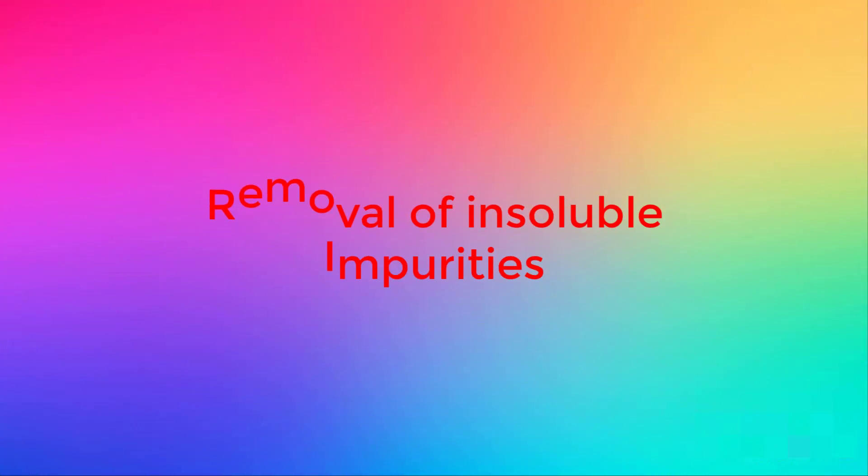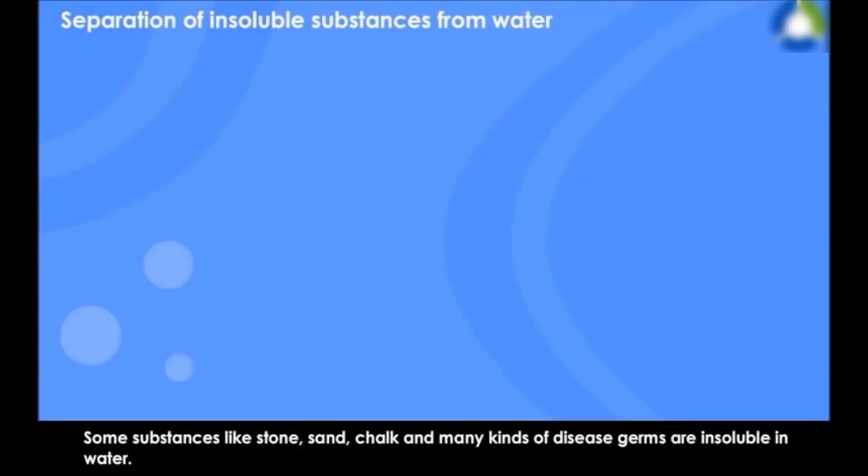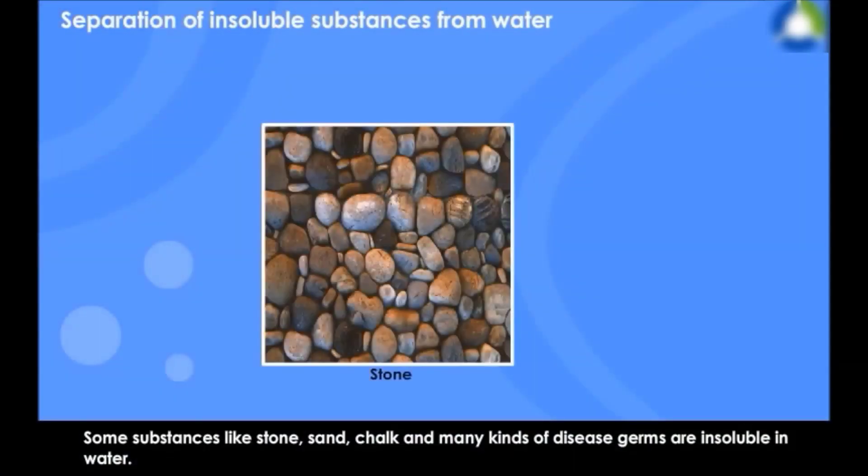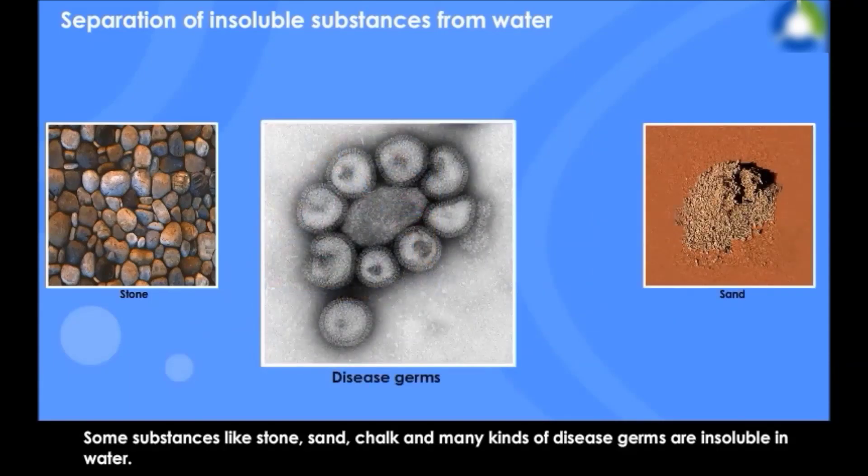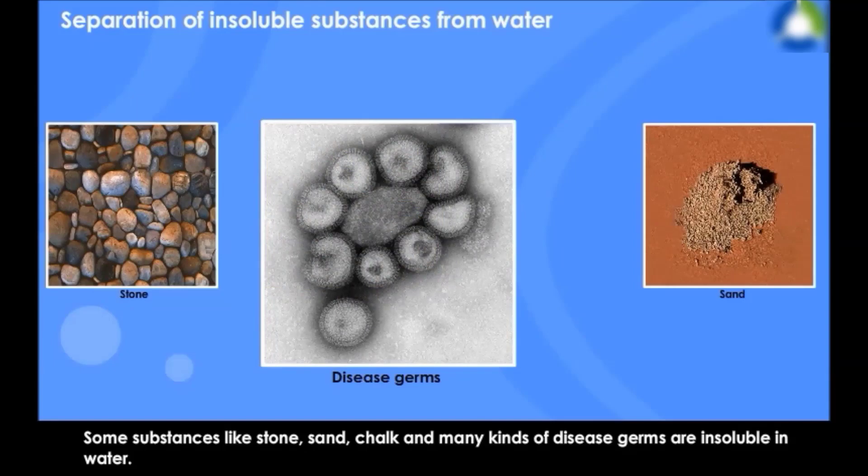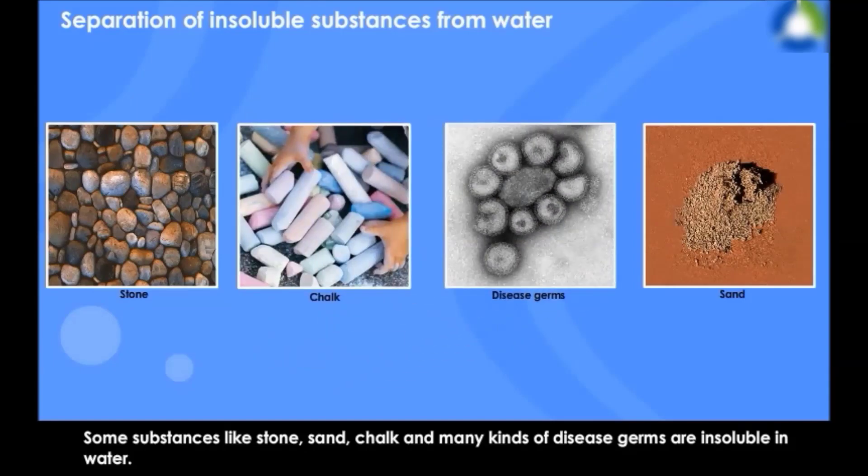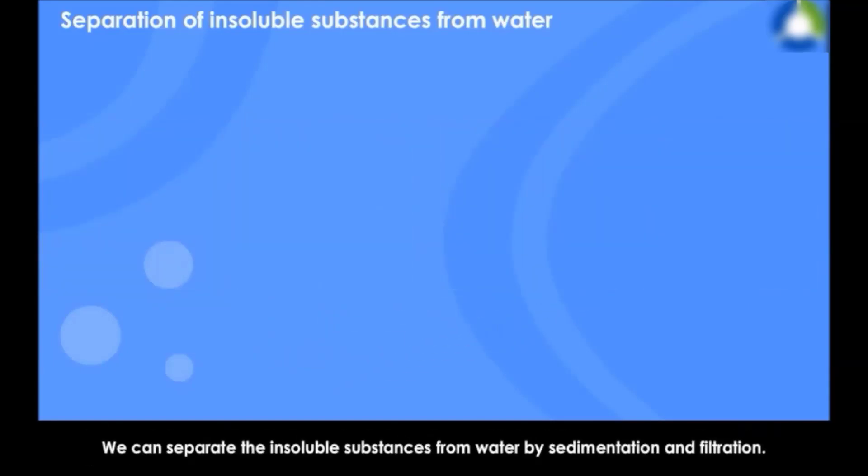Now we will discuss removal of insoluble impurities. Some substances like stone, sand, chalk and many kinds of disease germs are insoluble in water. We can separate these insoluble substances from water by sedimentation and filtration.